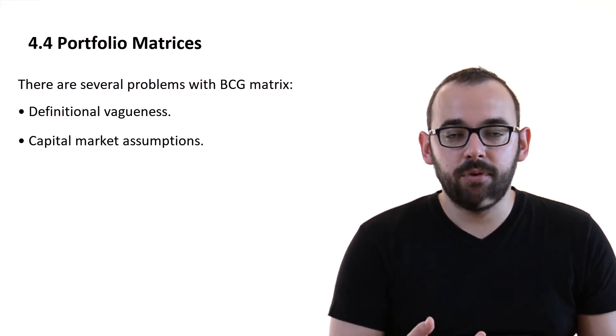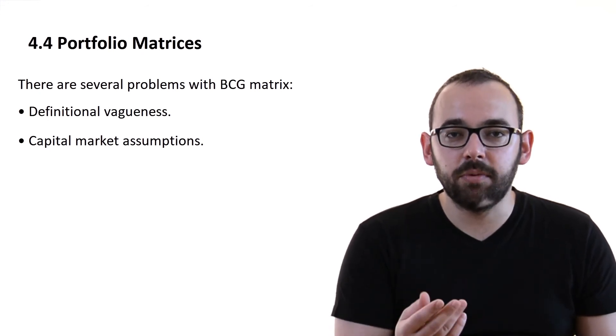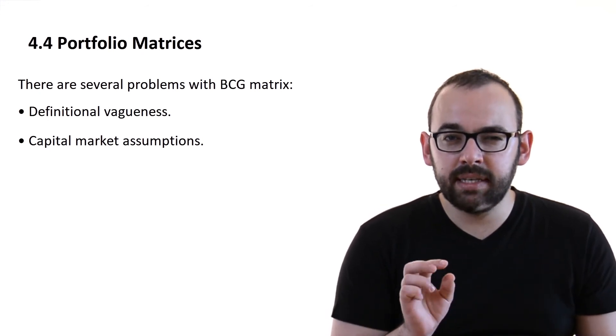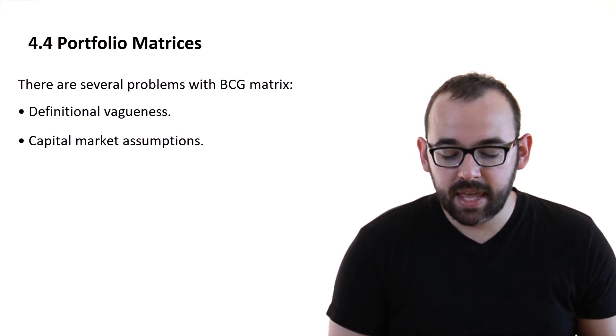Maybe there are some companies and some investors who have 40 question marks. How do they finance them? Well, through raising the capital, through further investments, issuing stocks, and so on. The BCG matrix has a little flaw that it has this capital market assumption.